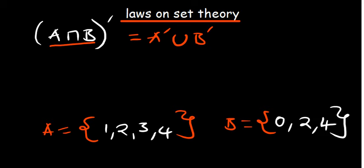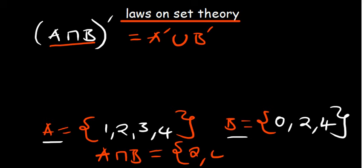We have A intersection B. The complement of a set means what is outside that set. So the complement of A intersection B means we are not interested in what is in the brackets, but what is outside. First, let's find A intersection B — the common elements between the two sets are 2 and 4.